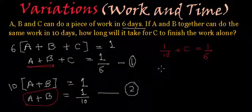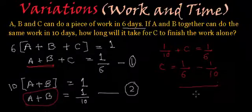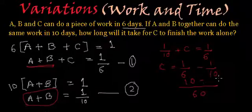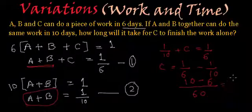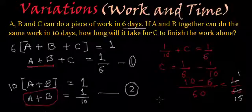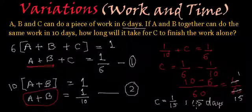So C will be equal to one by six minus one by ten. The LCM of six and ten will be sixty. Sixty divided by six is ten, ten multiplied by one is ten; minus sixty divided by ten is six, six multiplied by one is six. So this will be equal to four by sixty. And if we solve it further, we get one by fifteen. So we have got C — the working capacity of C — as one by fifteen. That means C will take fifteen days to finish the job. So this is our required result.